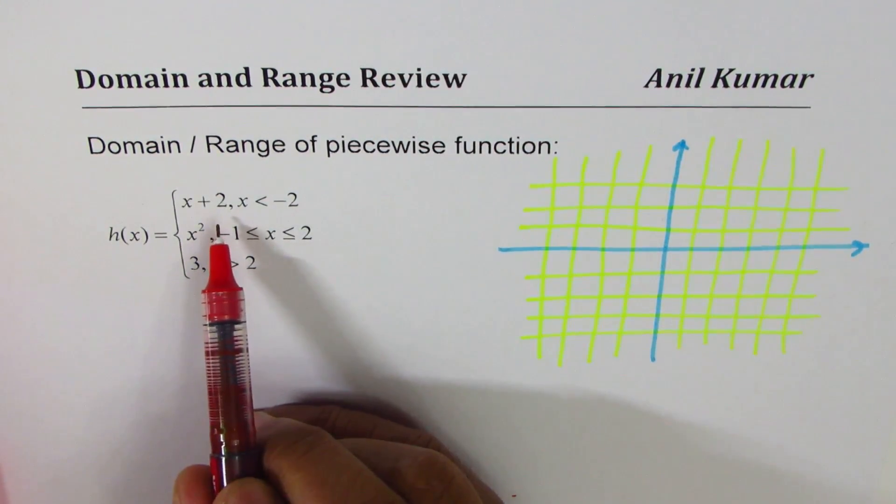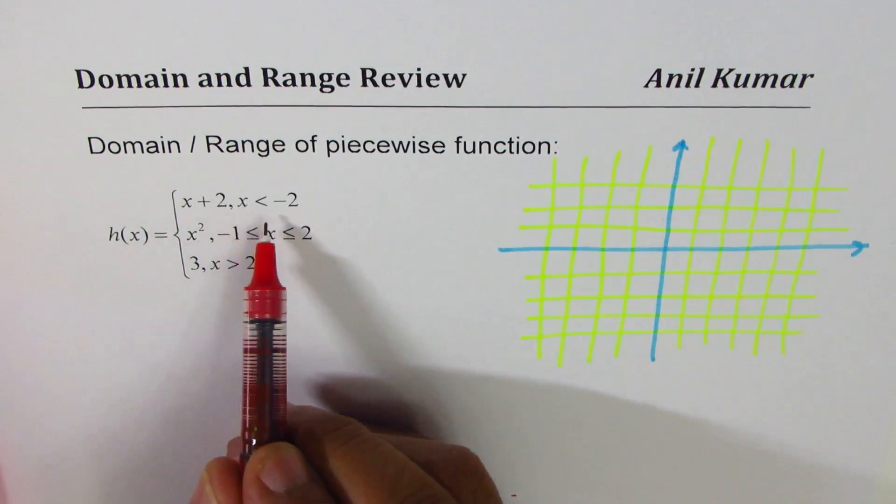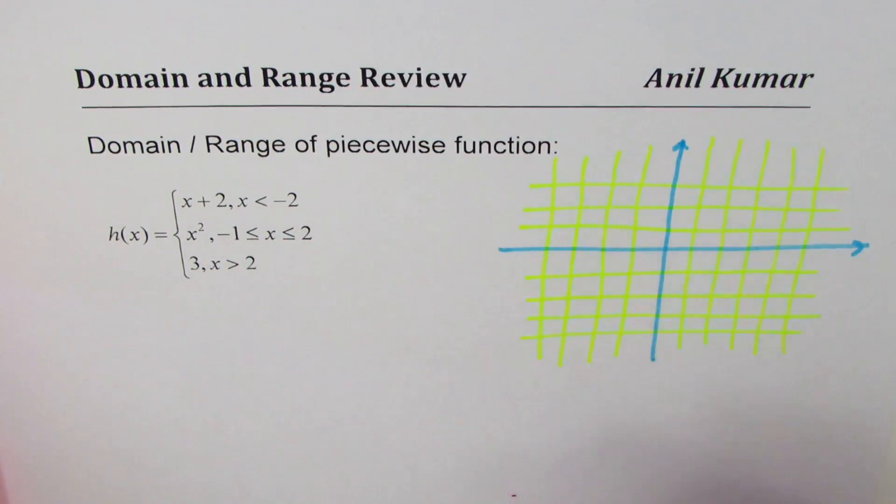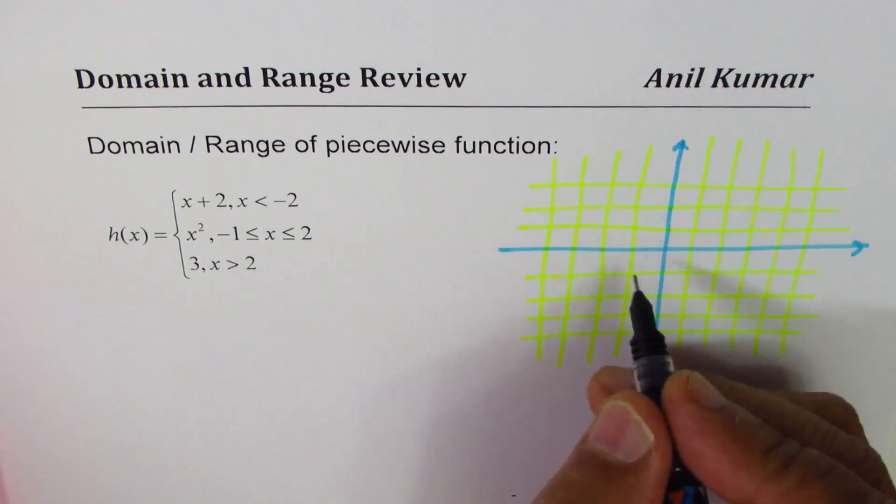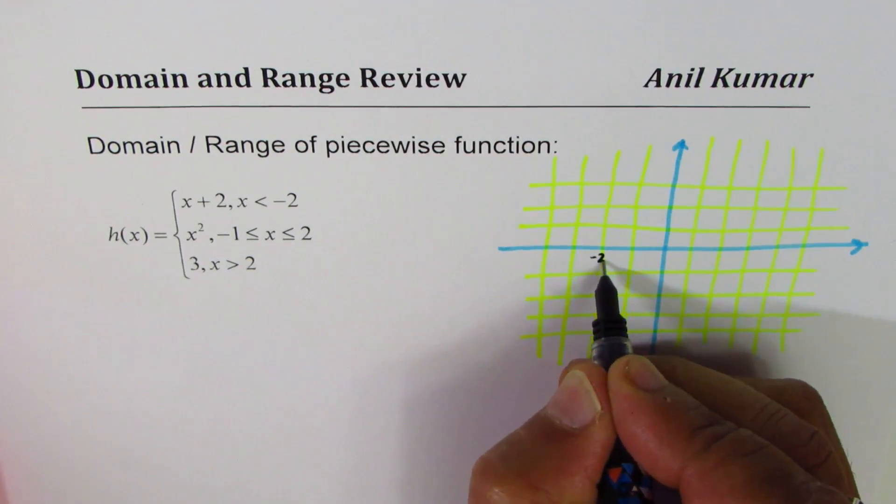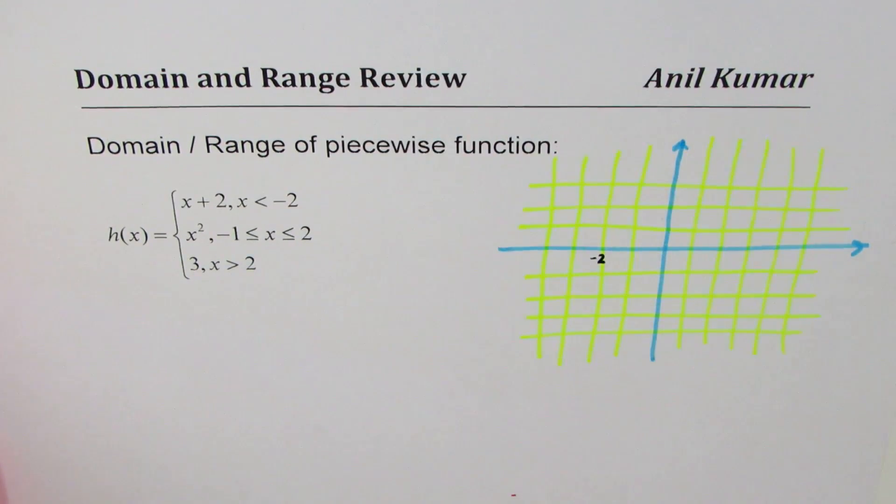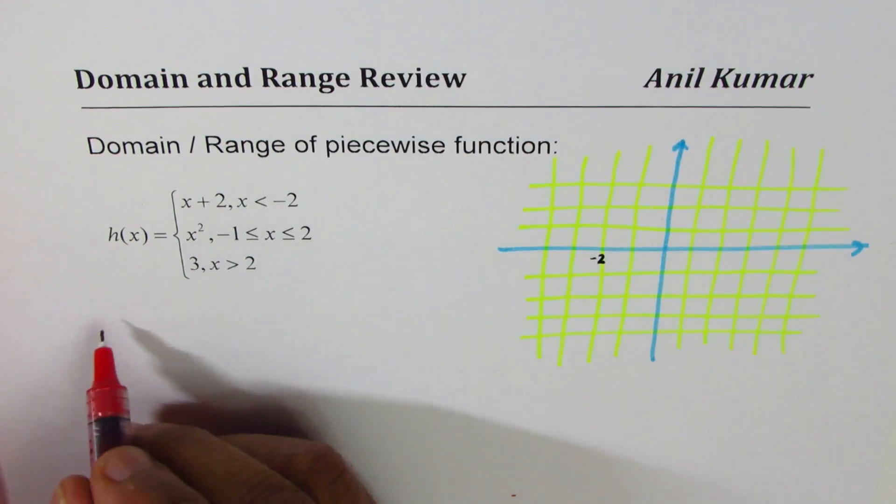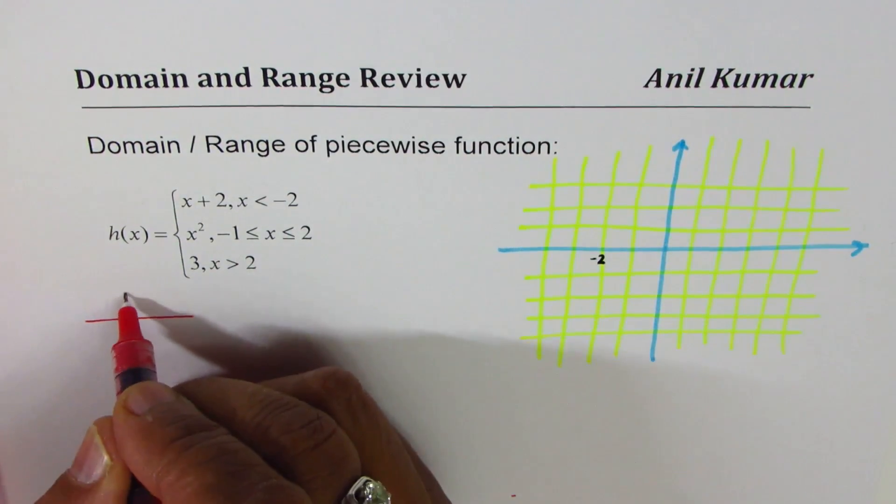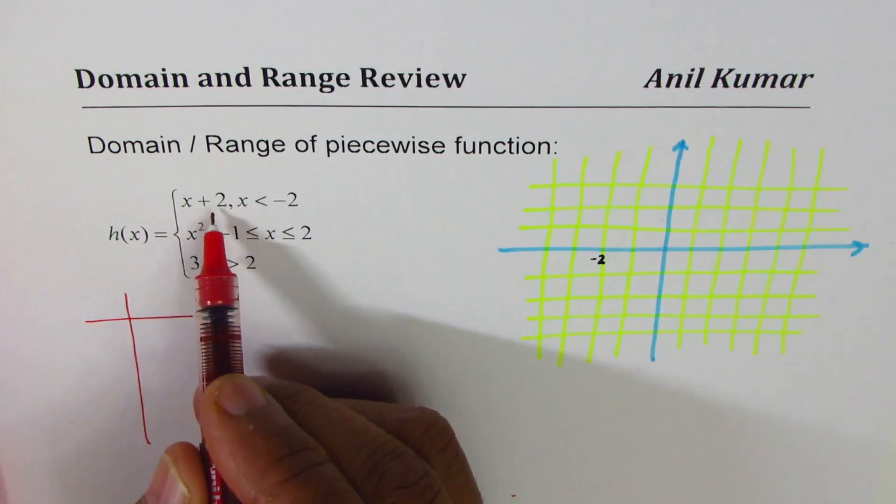So let's begin with the first piece, which is left side of minus 2. What we can do is we can make a table of values. This is for the first one.